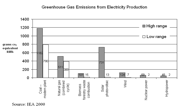Examples of mitigation include reducing energy demand by increasing energy efficiency, phasing out fossil fuels by switching to low-carbon energy sources, and removing carbon dioxide from Earth's atmosphere. Another approach to climate change mitigation is climate engineering. Most countries are parties to the United Nations Framework Convention on Climate Change (UNFCCC), whose ultimate objective is to stabilize atmospheric concentrations of GHGs at a level that would prevent dangerous human interference with the climate system.